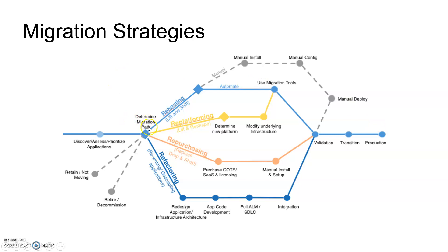If you have chosen re-platforming as your migration path, you first determine your new platform. For example, if you are using SQL Server and want to move to Azure SQL or Amazon RDS, you modify the underlying infrastructure, then perform data migration to the cloud, and then proceed with validation, transition, and production.